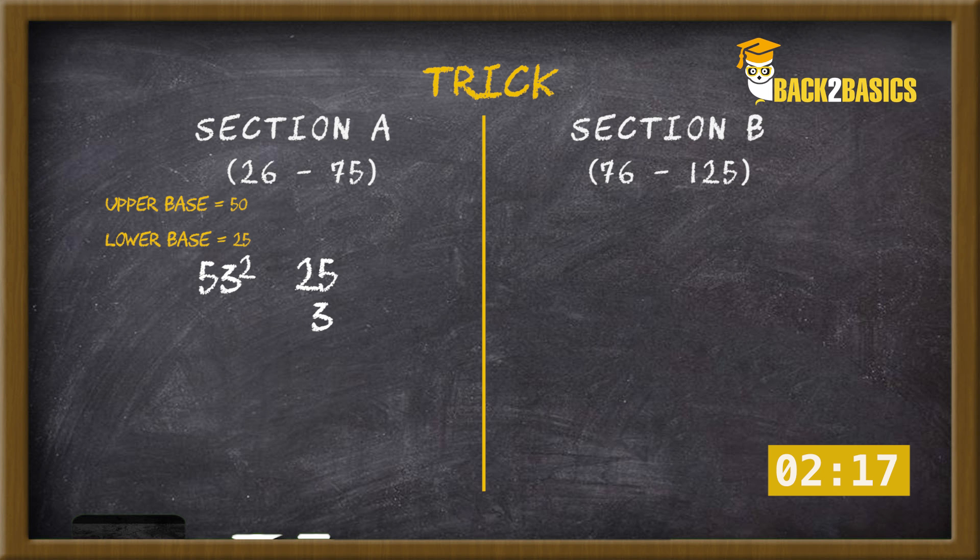Add 25 plus 3 that is 28. The remaining two digits will be square of 3 which is 09. Hence 53 square equals 2809.